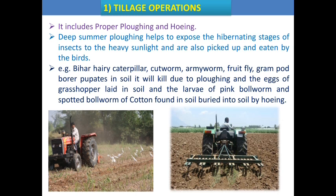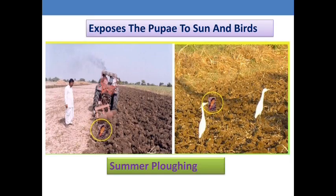Examples of insects whose life stages are present in the soil include Bihar hairy caterpillar, cutworm, armyworm, fruit fly, and gram pod borer — whose pupae are present in soil and killed by plowing. Eggs of grasshoppers and larvae of pink bollworm and spotted bollworm are buried inside the soil with weeding. This picture shows how pupae are exposed to the environment through plowing and picked up by birds.